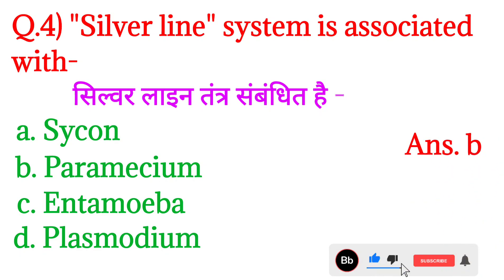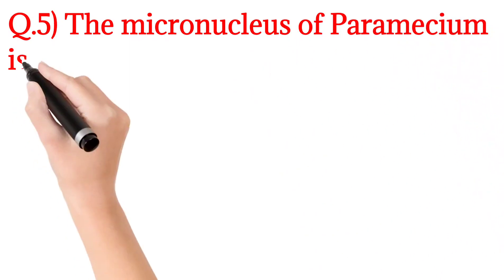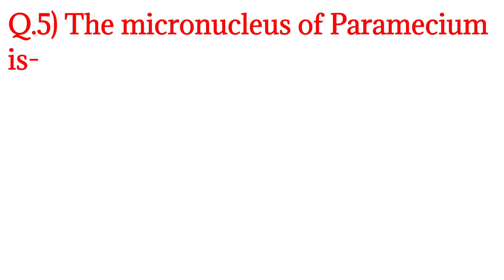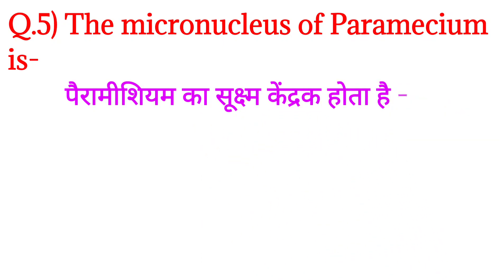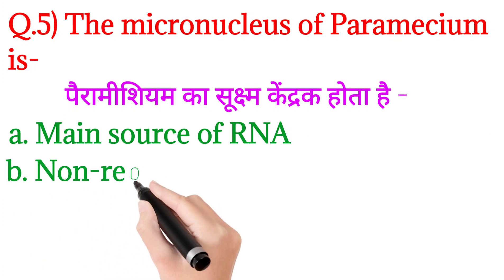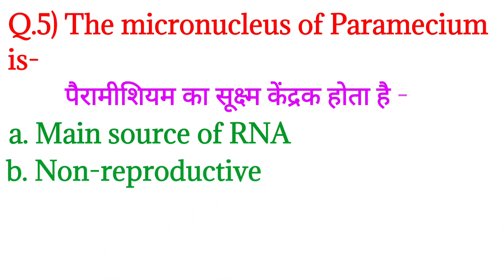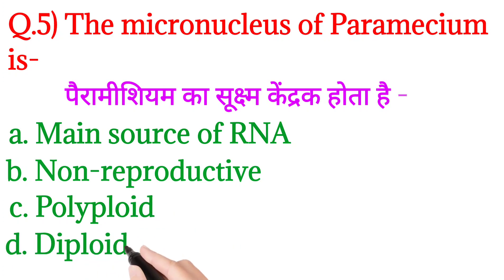Chalo iska answer hoga option number B: Paramecium. Next question, question number 5 — the micronucleus of Paramecium is — Paramecium ka micronucleus kaisa hota hai? Option A: main source of RNA, option B: non-reproductive, option C: polyploid, and option D: diploid.